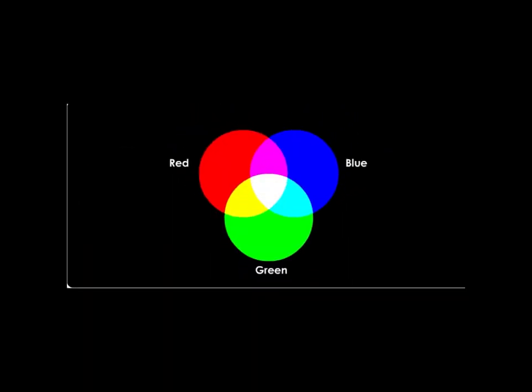Observe the animation above. When we add two primary colours together, they form a new colour. These newly formed colours are known as secondary colours.